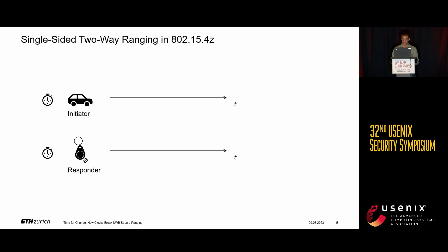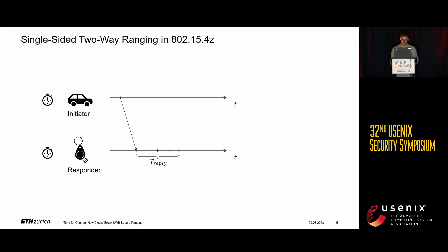We assume at the beginning that they share an ideal clock, so there are no clock errors. The initiator starts the ranging procedure by sending a message to the responder, which the responder receives after some propagation delay. When the responder receives that message, it has to process it and send a reply — that takes a certain amount of time, say one millisecond. This millisecond corresponds to a certain number of ticks on the responder's clock, which is the reply time T_reply that the initiator knows.